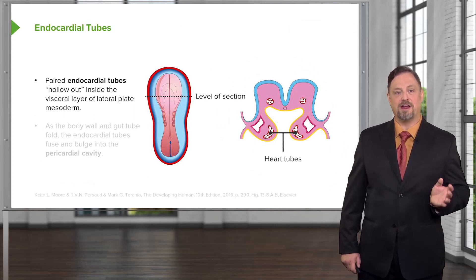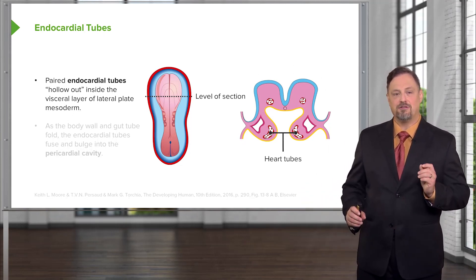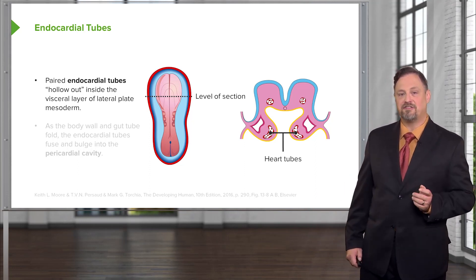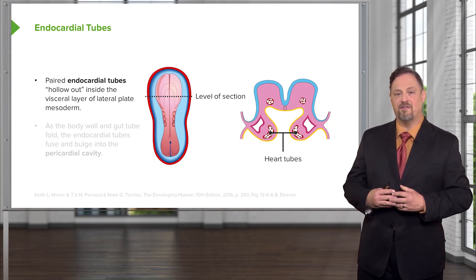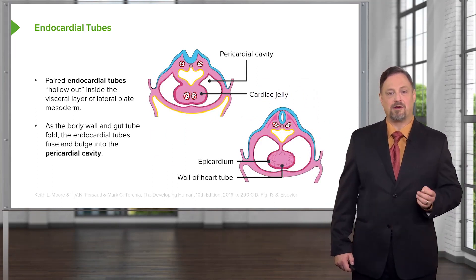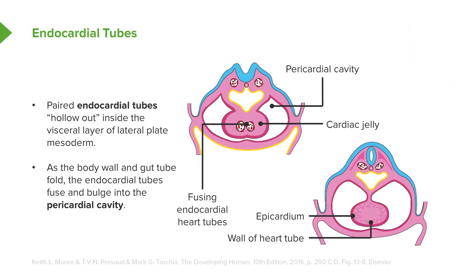When the visceral layer of lateral plate mesoderm folds anteriorly to create the gut tube, it has two tubes within it called endocardial tubes, and these are going to be the early primordia of the heart. As they're brought together, they come into existence just ventral to the developing gut tube and they pull a small cavity with them. That cavity is part of the intraembryonic coelom, and specifically in this region we refer to it as the pericardial cavity. The endocardial tubes are brought together, fuse, and develop what's referred to as cardiac jelly around them. Around the cardiac jelly is developing myocardium, or muscle of the heart. This myocardium is going to be able to beat relatively early, but it's not until those tubes fuse that it's going to be able to propel blood through the chamber inside.